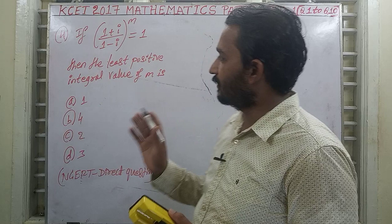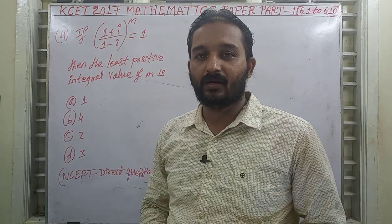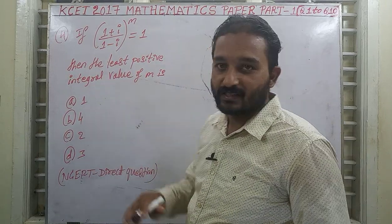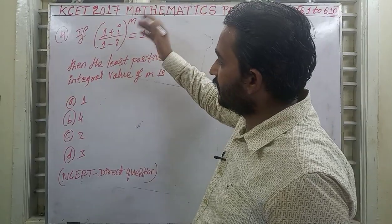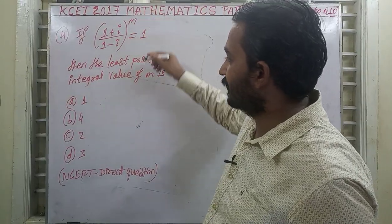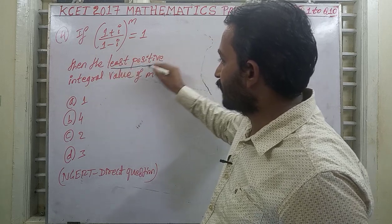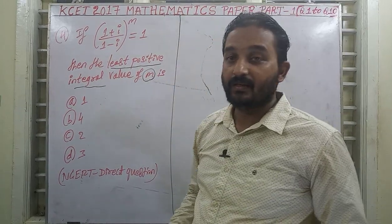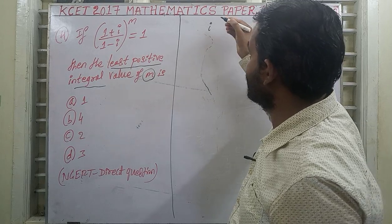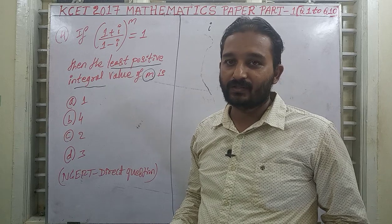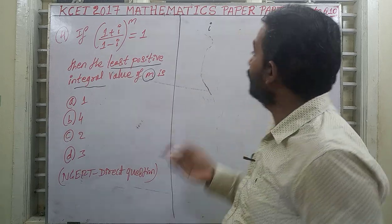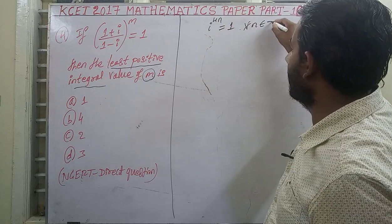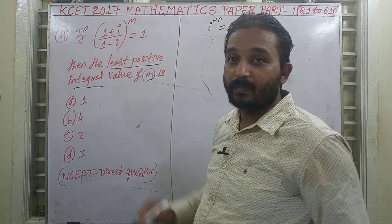Now question number 4 is based on Complex Numbers and Quadratic Equations. Usually they ask one or two questions on this chapter in KCET. The question asks: if ((1+i)/(1−i))^m = 1, find the least positive integral value of m. We know the powers of i: i¹ = i, i² = −1, i³ = −i, i⁴ = 1, and i^(4n) = 1 for all n.